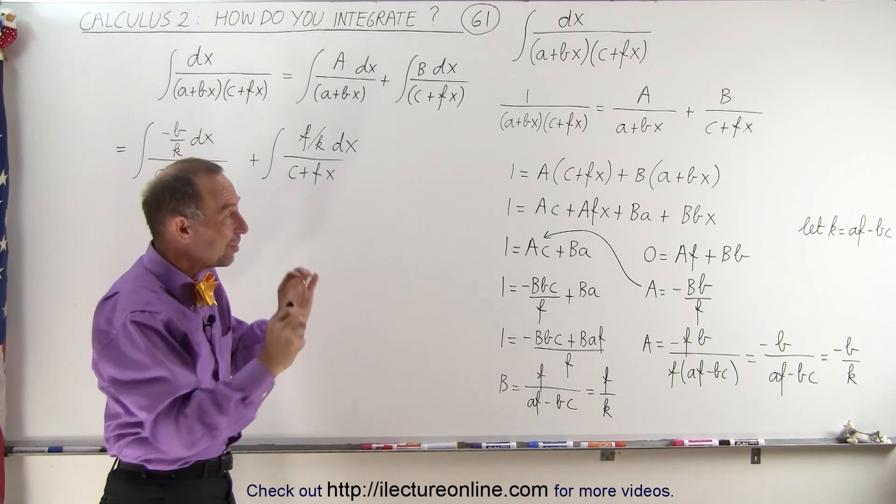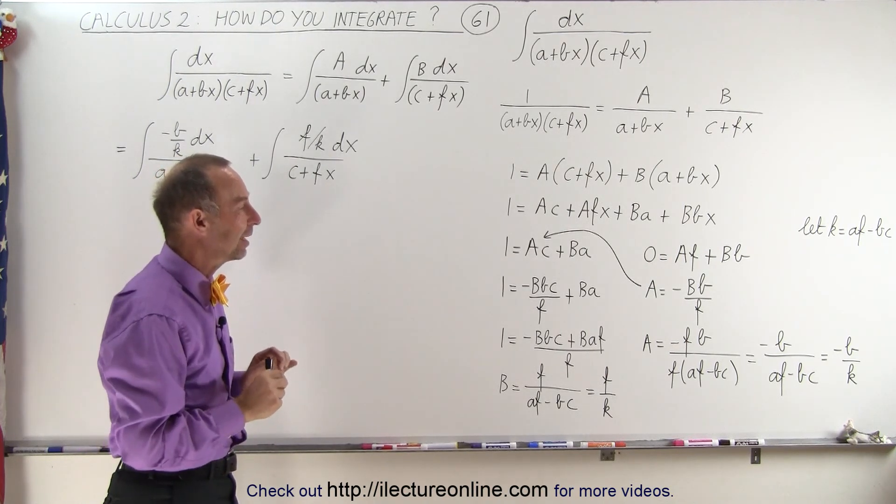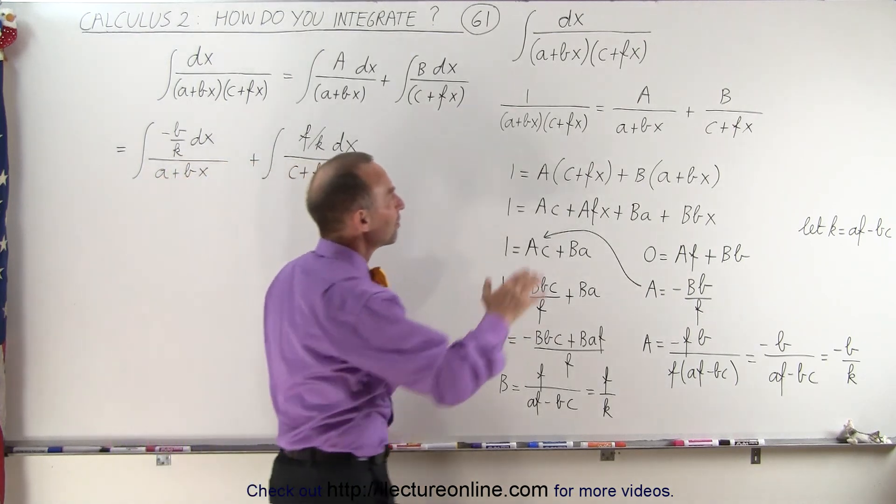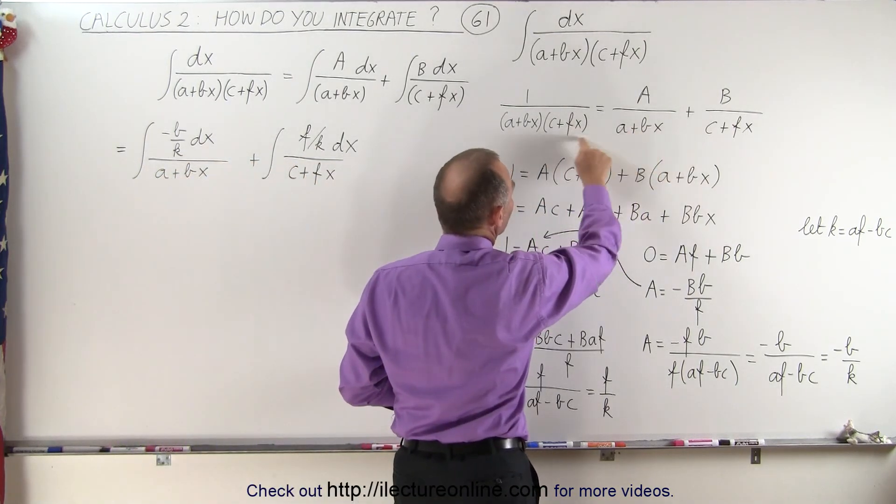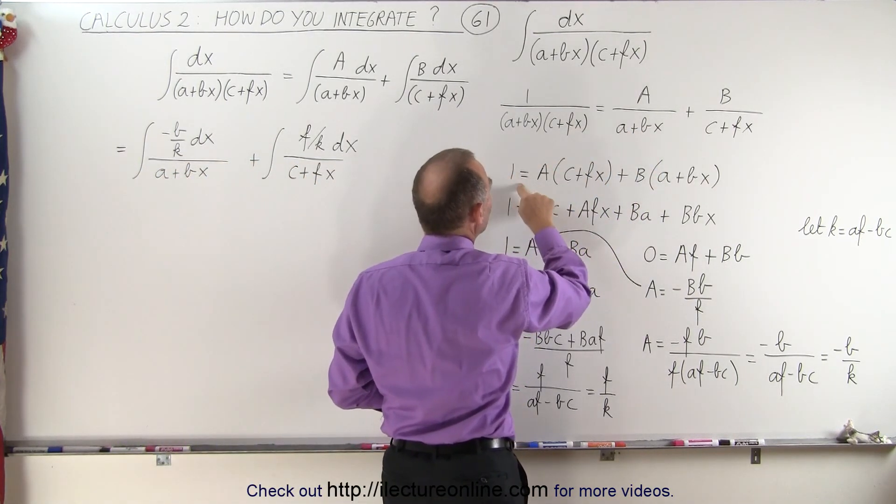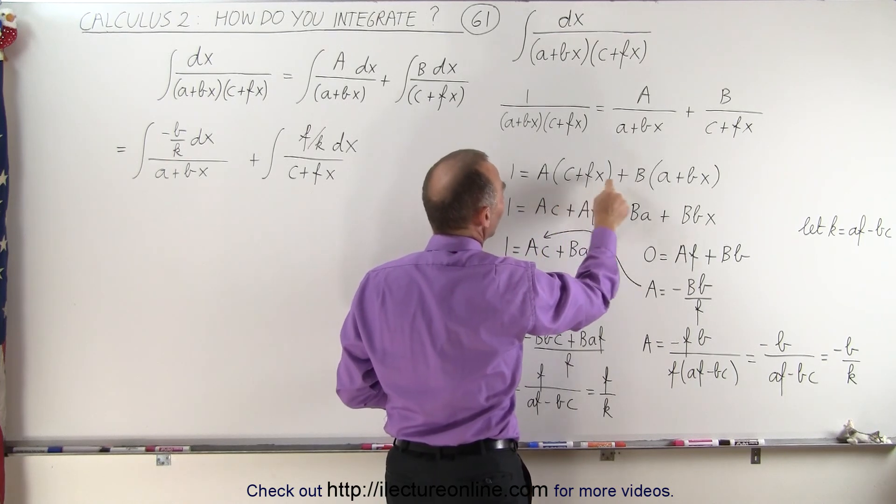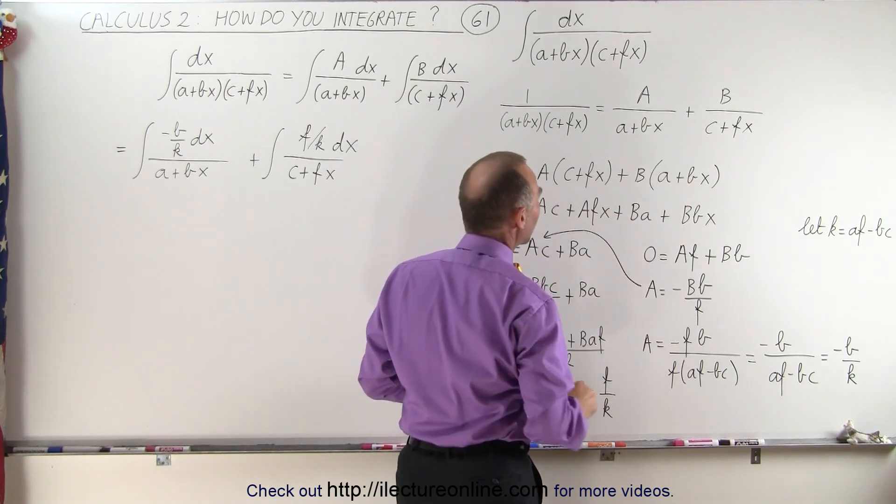Now again, algebraically, you really got to keep track of everything carefully. So notice if we multiply both sides of the equation by the common denominator, we get 1 equals A(c + fx) plus B(a + bx).